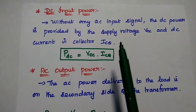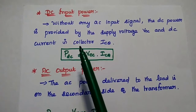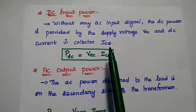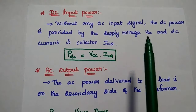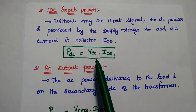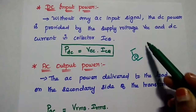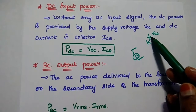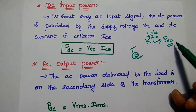Next, we are going to find out the efficiency of this transformer coupled Class A amplifier. For that, we consider the DC supply power and AC output power. Without any AC input signal, the DC power is provided by the supply voltage VCC and DC current drawn in the collector circuit, that is equal to VCC into ICQ. Without any input signal, if you give only the supply voltage, the current through the collector circuit is ICQ, which gives only the DC supply power.